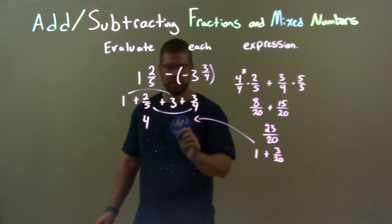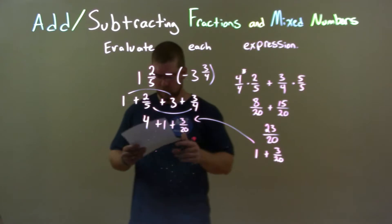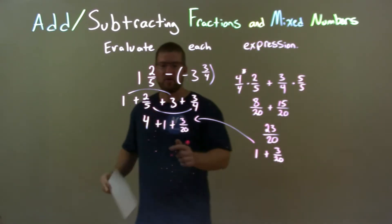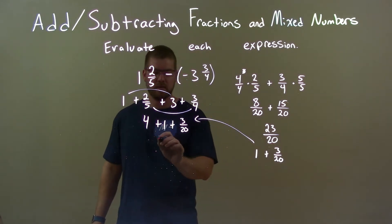Now, I'm going to bring that over here. I have plus 1 plus 3 over 20. And so, we add our whole numbers. 4 plus 1 is 5. And we have 3 over 20 right there.